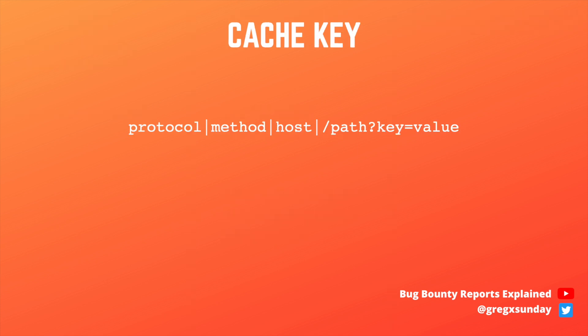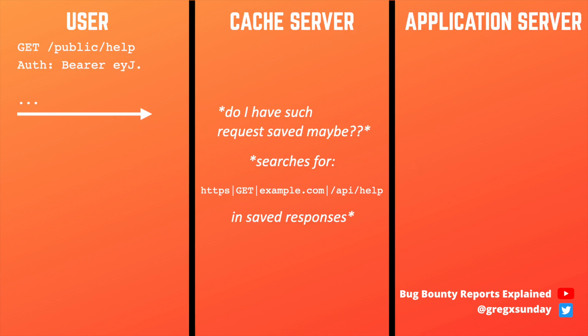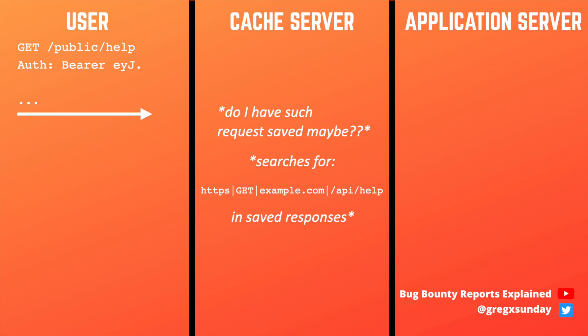That's when a cache key is used. It's a signature of a request based on which the cache server decides what to do. A simple cache key could look like this, and if all those parameters match, the cache server decides it can respond with a saved response. The inputs included in the cache key are called keyed inputs, and all the other ones are unkeyed inputs. The idea behind web cache poisoning attacks is to find an unkeyed input that will be ignored by the cache server but will be considered by the application server.